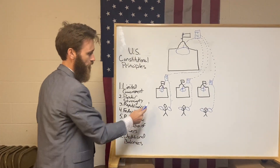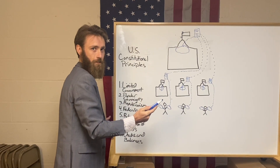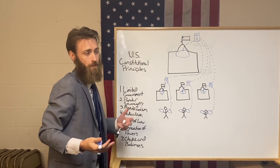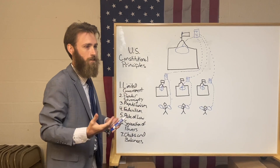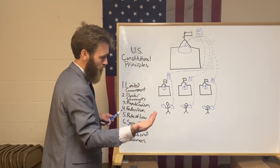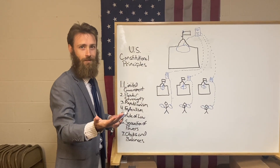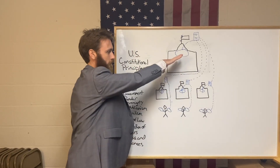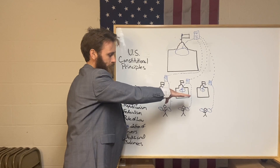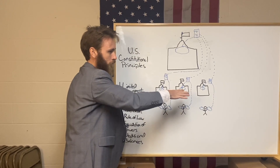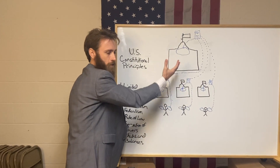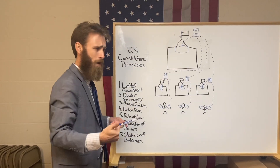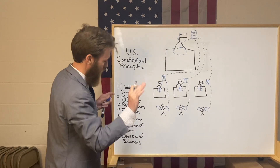We think about this most clearly in the Bill of Rights. What the Bill of Rights is, is a list of things still in our right hand — things we never gave away. It's not a list of things the government cannot do while having the power. No — it's things that the people kept. And so, that is limited government.